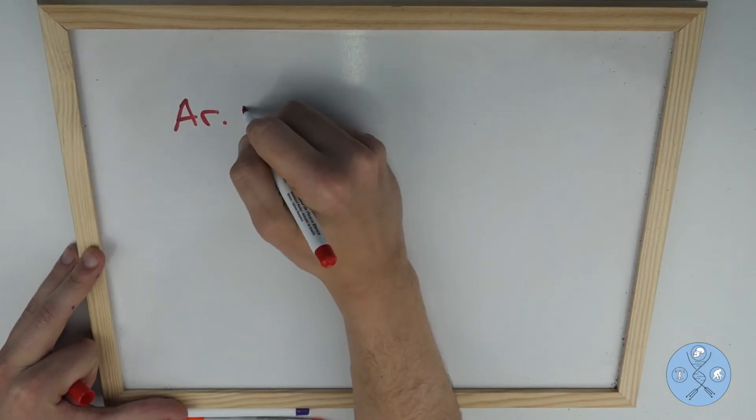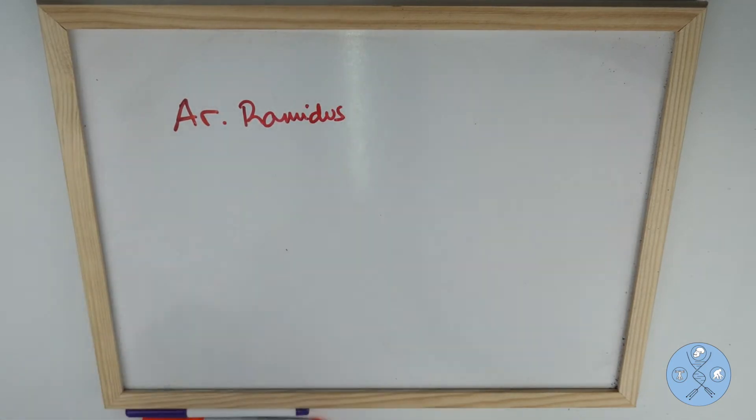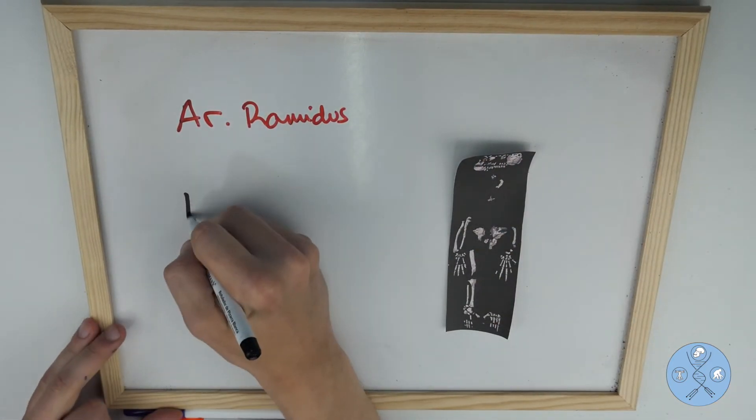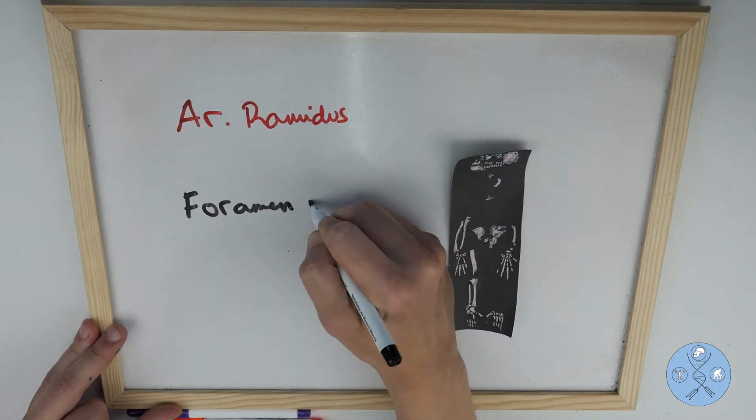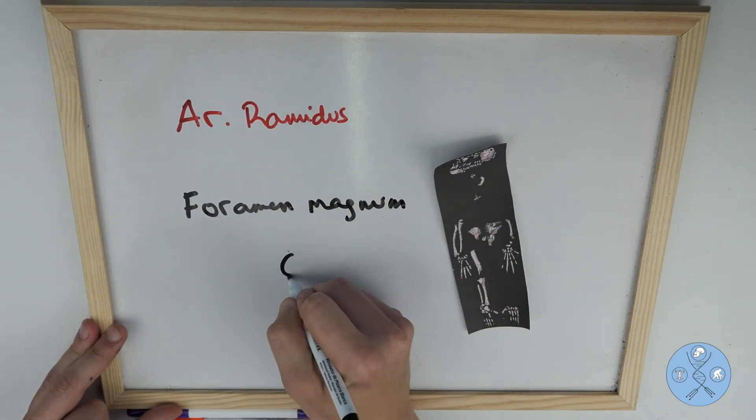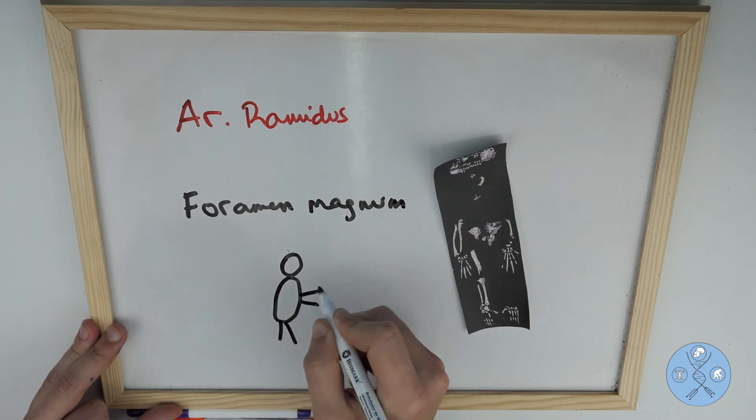Several features link Ardipithecus ramidus with hominins, the strongest evidence being the position of the foramen magnum, the place where the brain connects with the spinal cord. In Ardipithecus ramidus this opening is farther forward than in chimpanzees, though not as far forward as in modern humans.